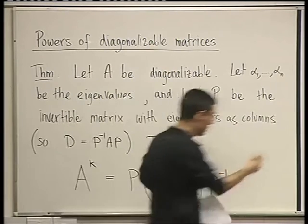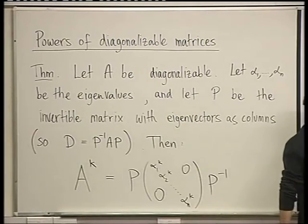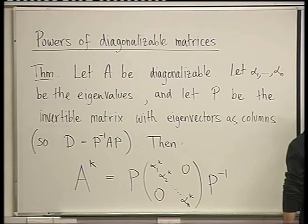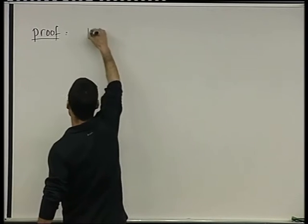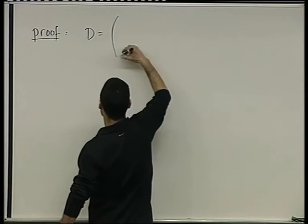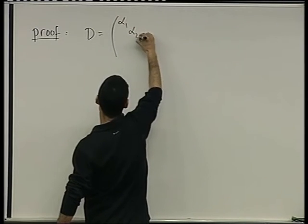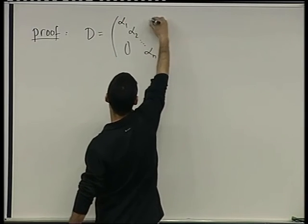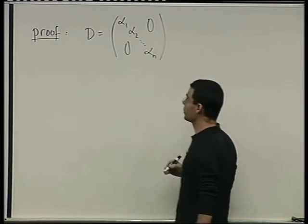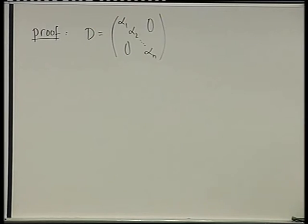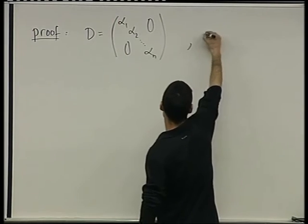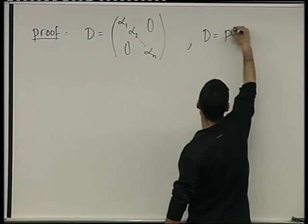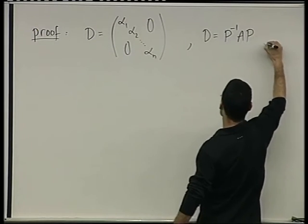So here's the proof. Let's denote D to be the diagonal form. D is the matrix with the alphas across the main diagonal. And we know that D is P inverse AP.